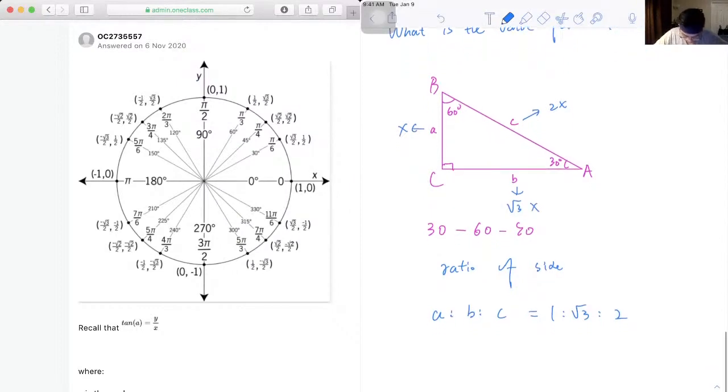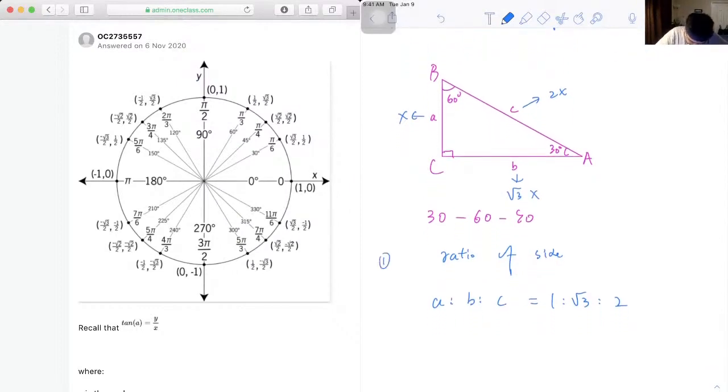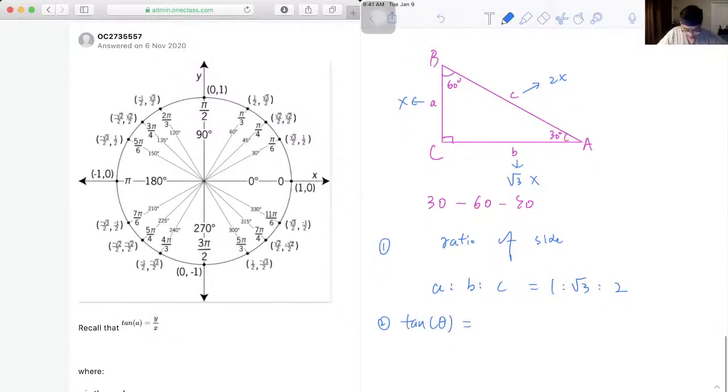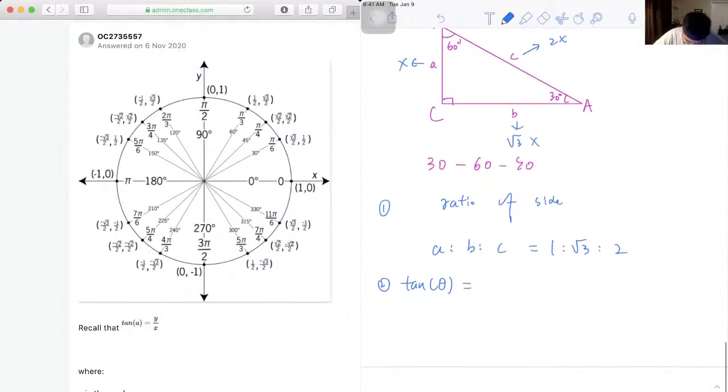Okay, so that's the first thing, and the second thing we need to know is whenever we talk about tangent theta, no matter what degree, it's always going to be opposite over adjacent.